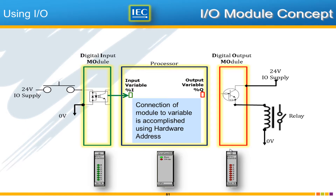That brings us to the IO module concept. On the input side, the digital input module is really just a way for a simple circuit — a simple switch — to turn on and off an optically isolated input inside the module. This is the interface into the PLC. The processor will see an input variable indicated by the syntax %I followed by a specific address, called the hardware address. Likewise, the processor controls output variables given by %Q, and those output variables control the real-world output module, which causes a flow of electric current to energize a relay that raises or lowers the gate.